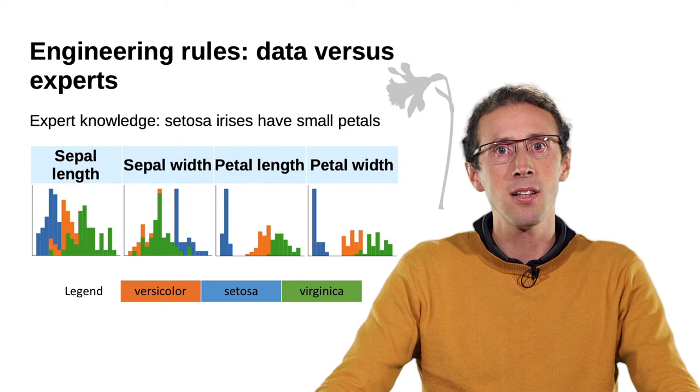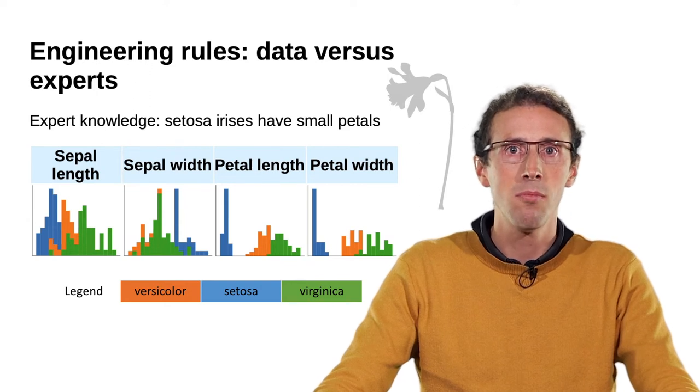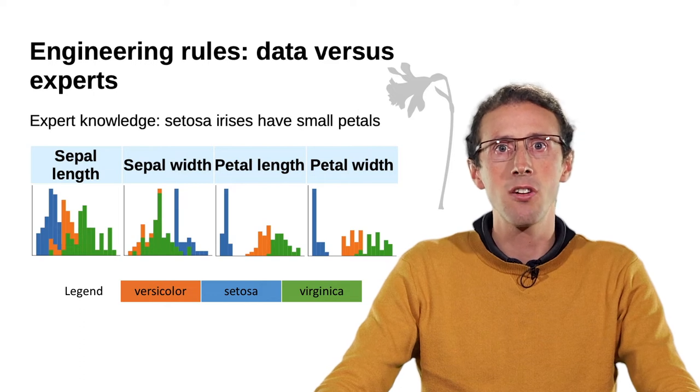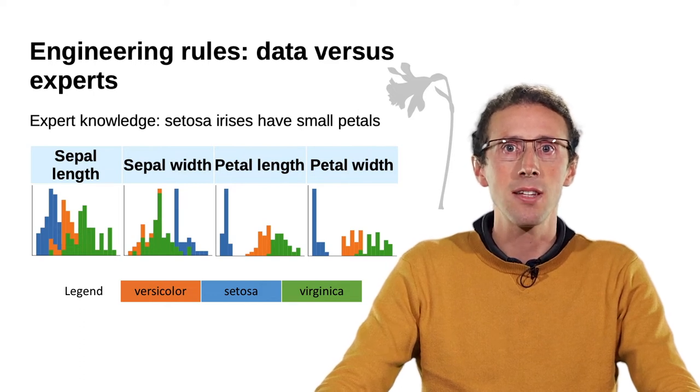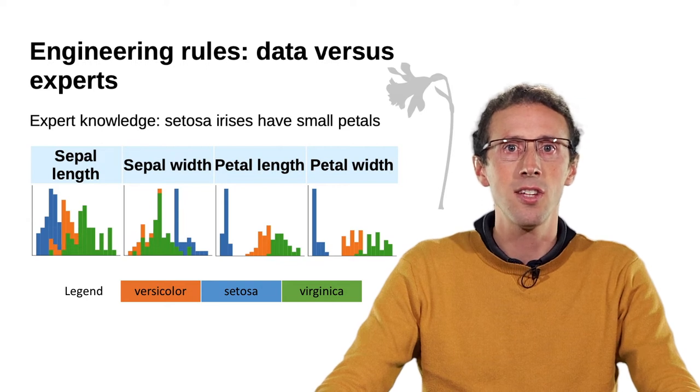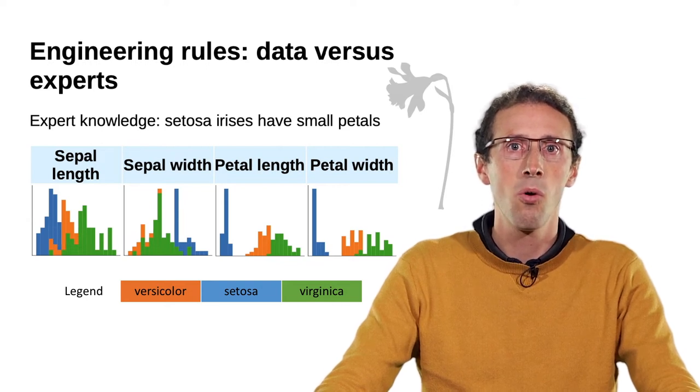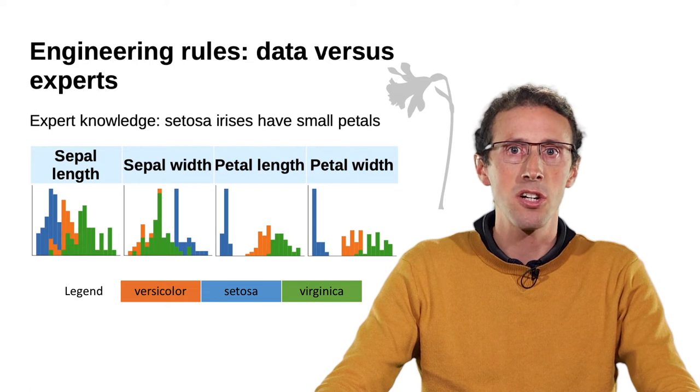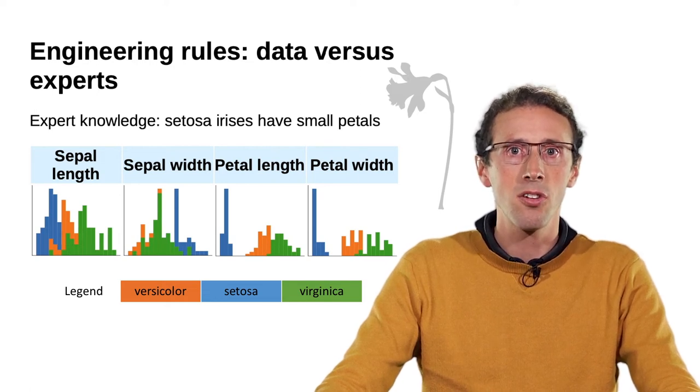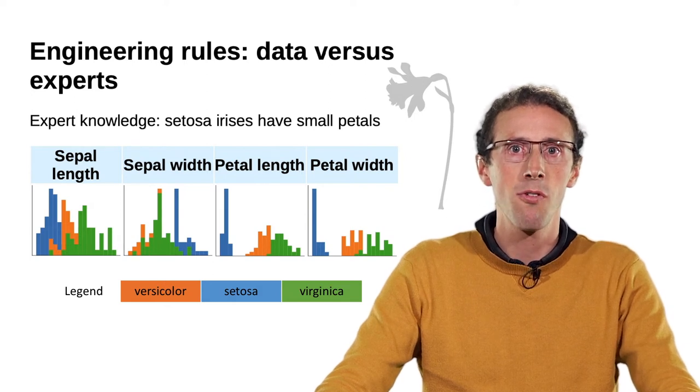But how can we deal with more complex, more numerous data? The benefit of machine learning is that it automates the creation of the rules from the data, including their details, such as where exactly to set the threshold on the petal length. In concrete terms, machine learning builds the prediction rules from the data.